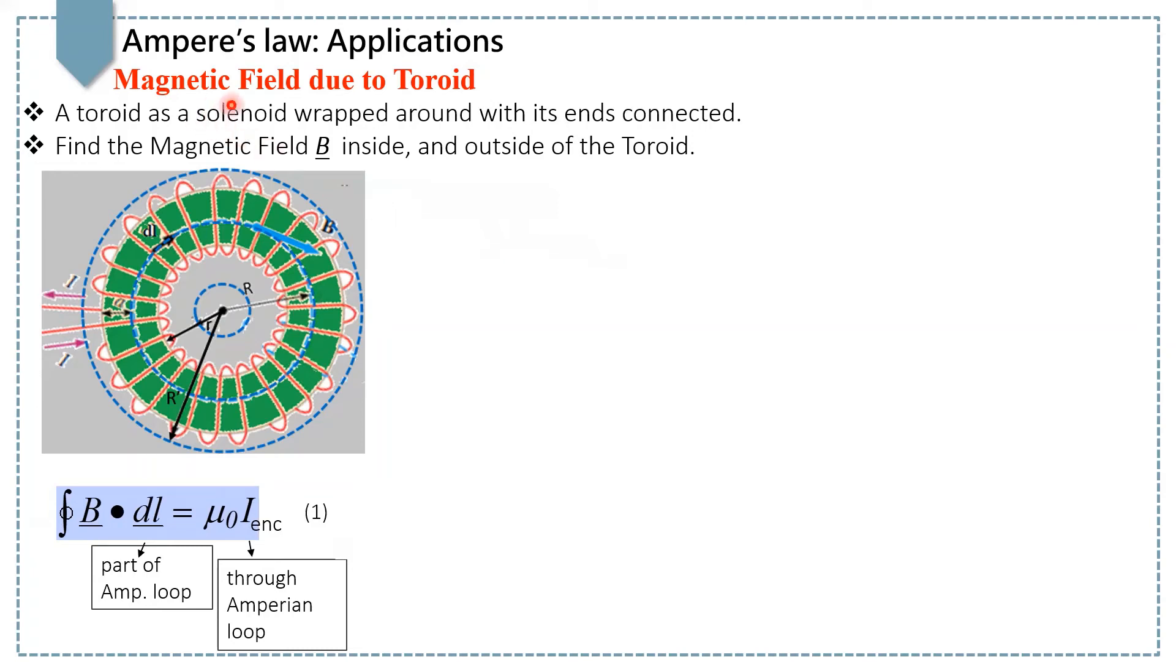In this lecture, we will discuss magnetic field due to toroid. Toroid is shaped like a solenoid, but that is bent into a circular shape. It has n-turns density and current is passing through it.